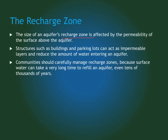The size of the recharge zone is affected by the permeability of the surface. Buildings and parking lots are designed not to let water through, so they act as impermeable layers and reduce the amount of water entering the aquifer. The less water in the aquifer, the less water available for us to use. We have to watch out for these recharge zones to make sure water can pass through and refill the aquifer, because it can take thousands of years for an aquifer to be refilled. This is the problem in California right now — people have used so much water that the water tables have dropped very low, because more water has been taken out than put back in by rain and other natural sources.